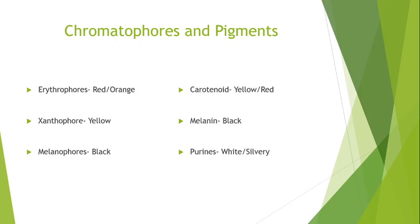The chromatophores contain various kinds of pigments and these are branched cells lying in the dermis. Various kinds of pigments such as carotenoid provide yellow or red color, then melanin which provides black color, and purine that provides white or silvery color. Many other pigments are present in fishes which are present in these chromatophores.